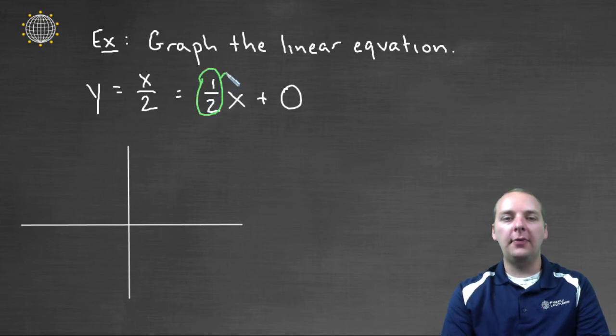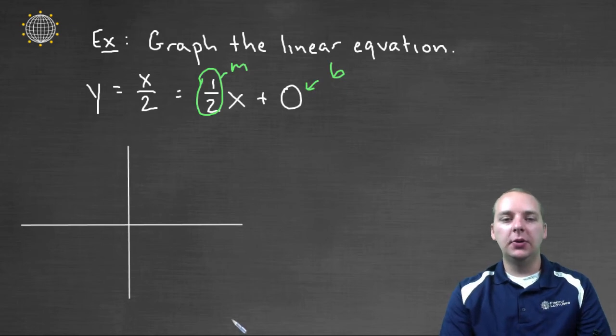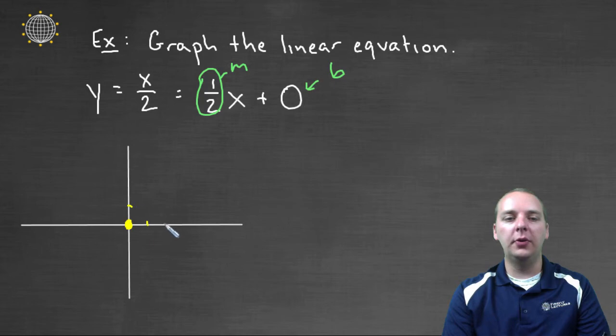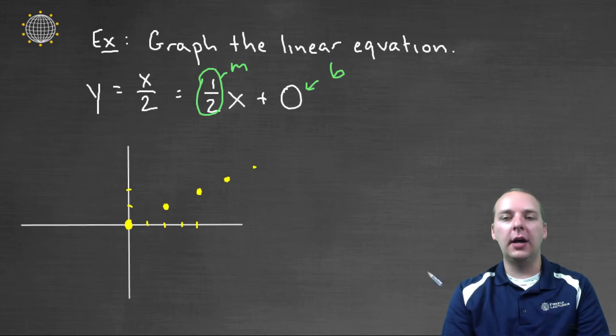So, as we've been doing, we'll start with a y-intercept of zero, and then we'll use this slope to get an additional point. We'll go up one over two, get a point, maybe go up one more over two more. And you can do that again, and again, and again. And you'll just get more and more points on your line.